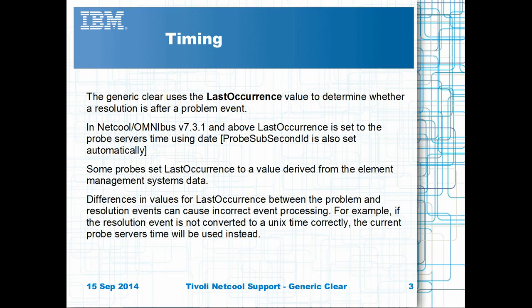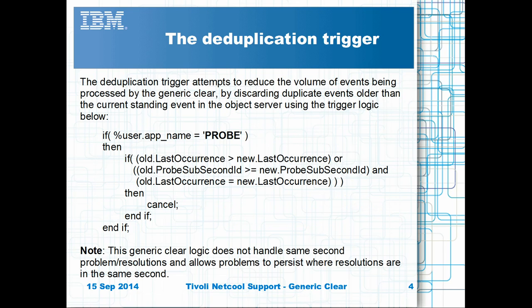Check the probe's rules file to determine if this default setting is overridden by the probe's rules files. Because problem and resolution events are uniquely defined, the deduplication trigger discards any events that are older than the current event held within the object server, based on the last occurrence and probe sub-second ID. If last occurrence is not the default value which is set alongside the probe sub-second ID, the deduplication trigger may discard the wrong events.